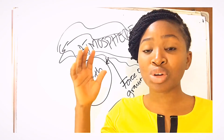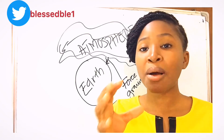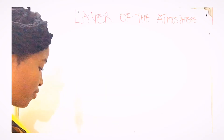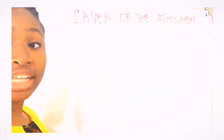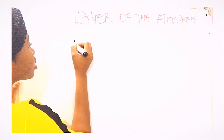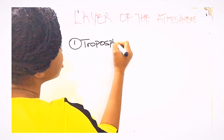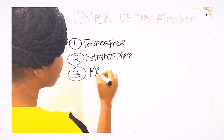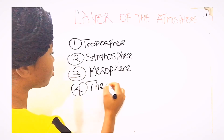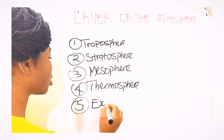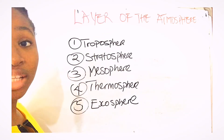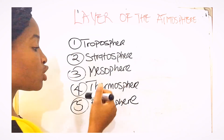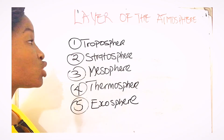Now that we are done with the definition of the atmosphere, we are going to go straight into the layers of the atmosphere, and we are going to talk about the actual layer where the aircraft flies. I'm just going to jot them down. These are the five layers: the troposphere, stratosphere, mesosphere, thermosphere, and the exosphere.